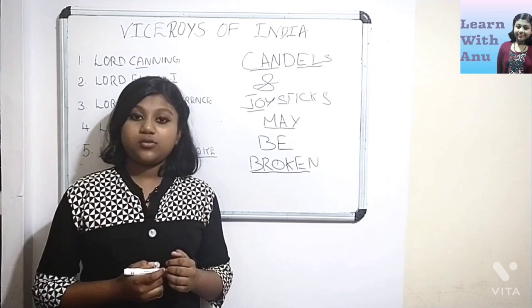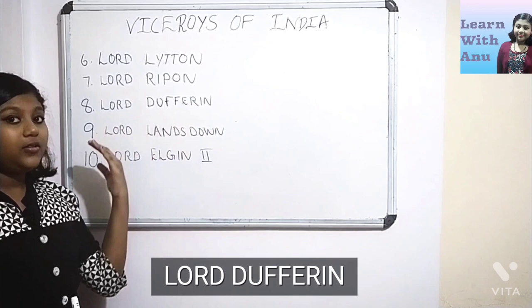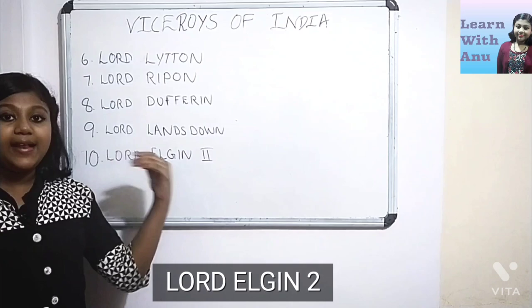Our sixth Viceroy is Lord Lytton. Then comes Lord Rippon. Next, Lord Dufferin. The ninth Viceroy was Lord Lansdowne. And our tenth Viceroy was Lord Elgin the second.